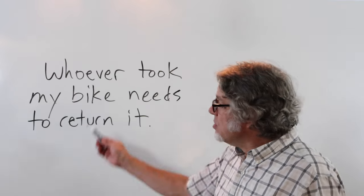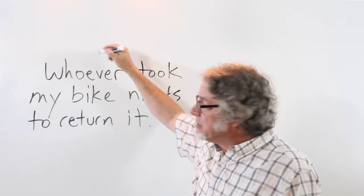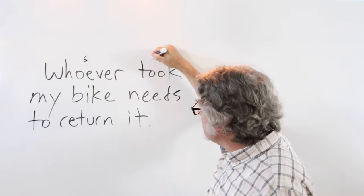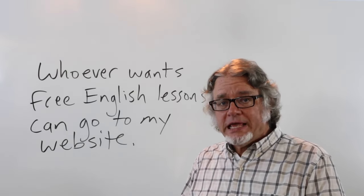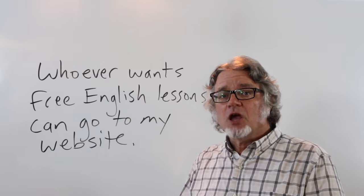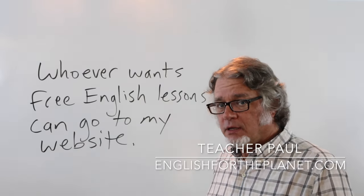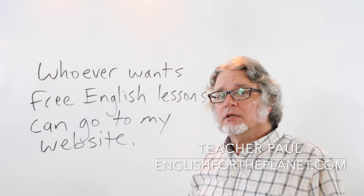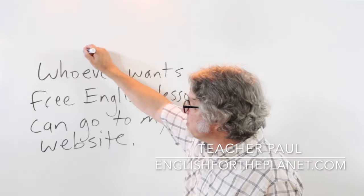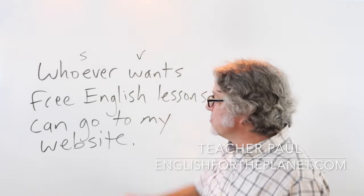I don't know who this person is, but this is the subject in the sentence and this is the verb. Whoever wants free English lessons can go to my website. This is any person, anywhere, can go there. This is the subject and then this is the verb.